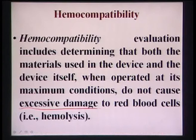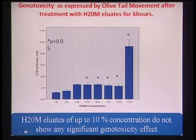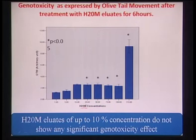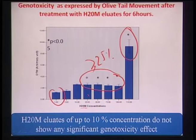Recalling the genotoxicity results shown previously - the comet assay results expressed in terms of olive tail moment, which is the length of fragmented DNA - this length depends on eluate concentration. On the x-axis, eluate concentration of hydroxyapatite (20 mol%) was tested. Compared to the negative control, compositions at concentrations greater than or equal to 25% as well as the positive control show statistically significant genotoxic effects because the DNA damage length or olive tail moment is much higher.